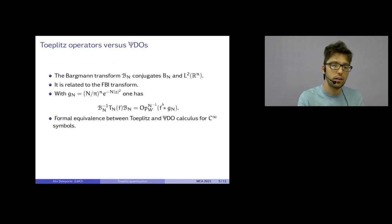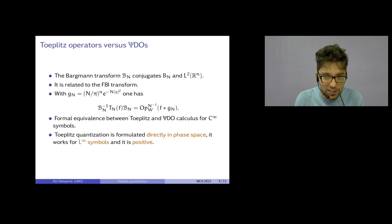So using this formula, you have a formal equivalence between Toeplitz and pseudo-differential calculus if you start with C^∞ symbols. You can somehow invert this formula up to O of h^∞, and everything that works in one world works in the other world. But why should we be interested in the Toeplitz world? So, three reasons. The first is that it's formulated directly in phase space. You don't have to micro-localize to study micro-support. Micro-support means support. Toeplitz quantization works for essentially bounded symbols. So if you want to cut and paste things, it's much easier if you don't have to track all the derivatives.